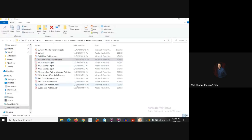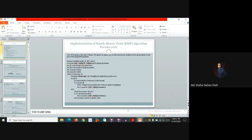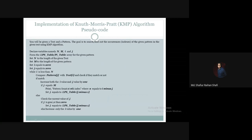If we do not have a match, then we check the current value of j. If j value is 0, then we increment i. Otherwise, if j is not 0, we set the value of j to LPS[j-1], which is the value from the LPS table at index j minus 1.